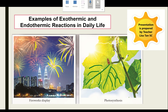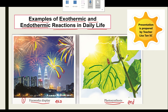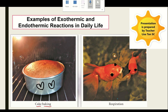Now let's look at examples of exothermic and endothermic reactions in daily life. Number 1: fireworks displays — heat is released to the surrounding, so this is exothermic. Photosynthesis — green plants absorb heat from the surrounding, so this is endothermic. Cake baking — heat is absorbed from the surrounding, so this is endothermic. Respiration — glucose is oxidized and energy is released to the body cells, so respiration is an exothermic reaction.